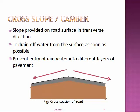The second cross-section element of a highway is camber, also called cross slope. If we see the cross-section of the road, it is not constructed horizontally — there is a slight slope provided to the sides. The slope provided on the surface in the transverse direction is called camber. This is provided to drain water falling on the surface as quickly as possible.